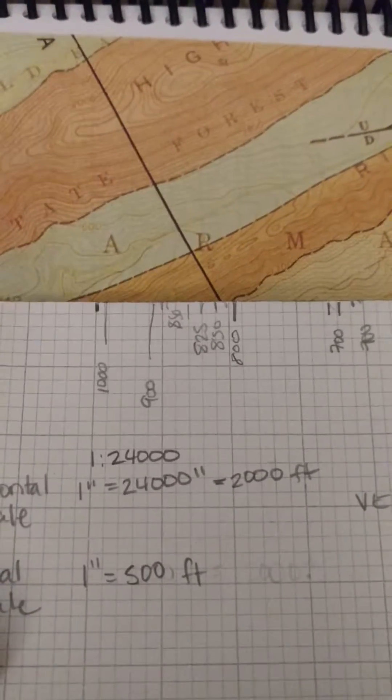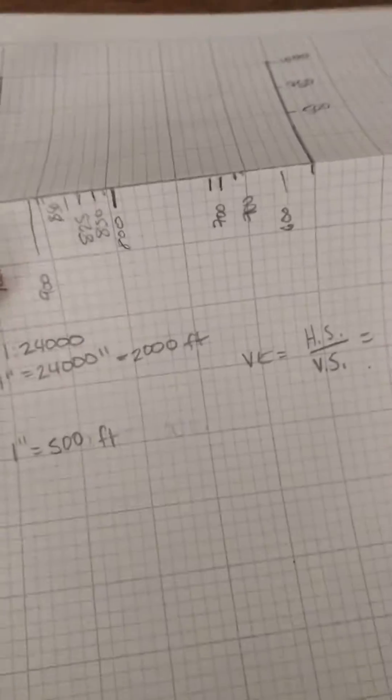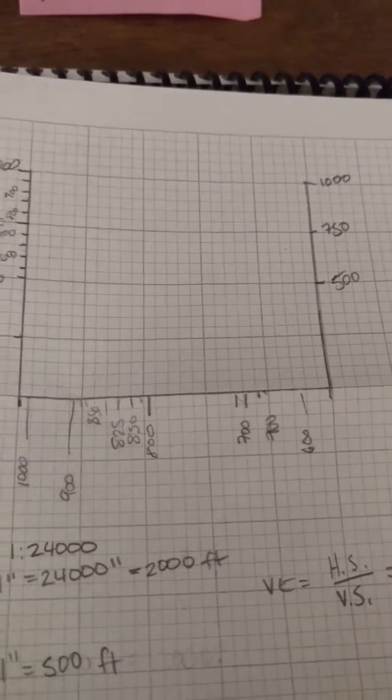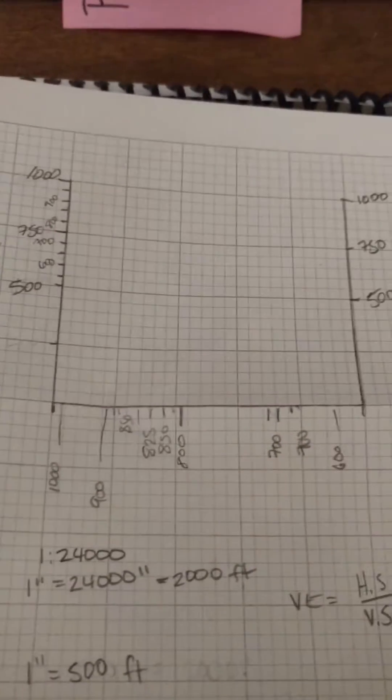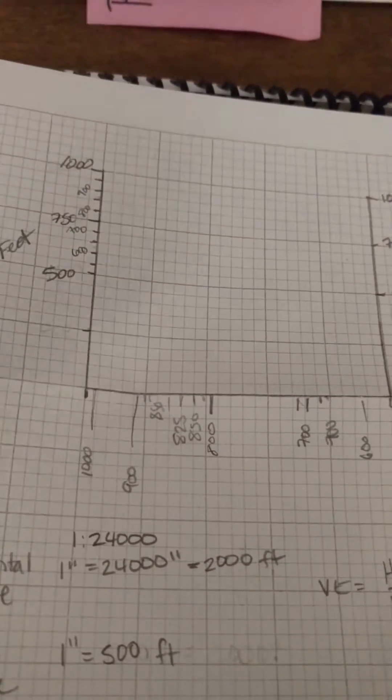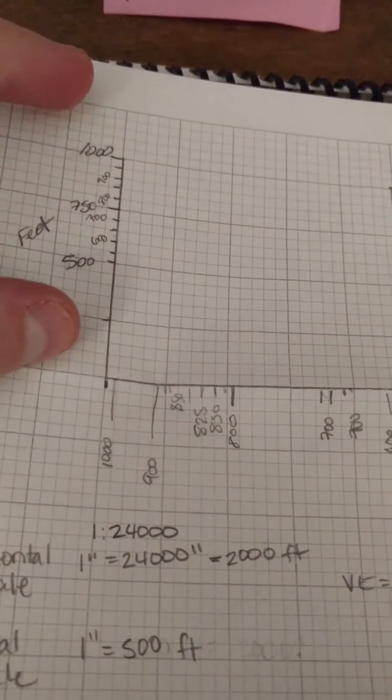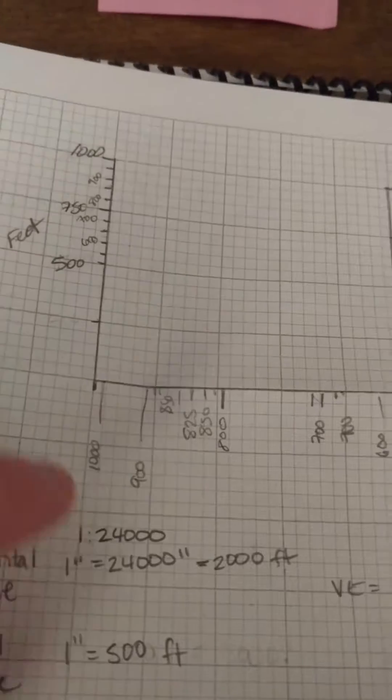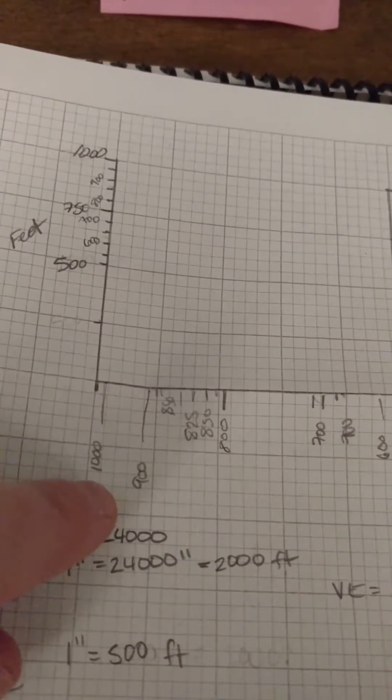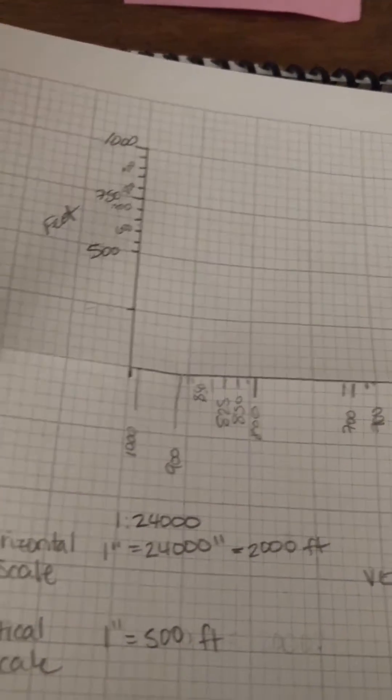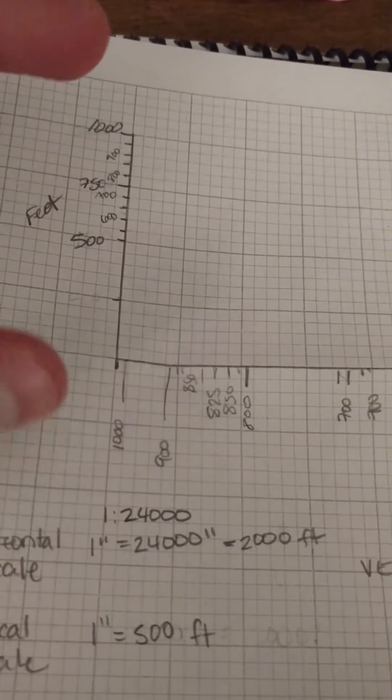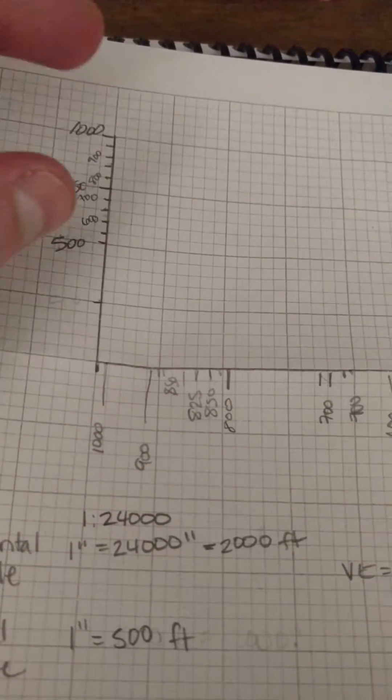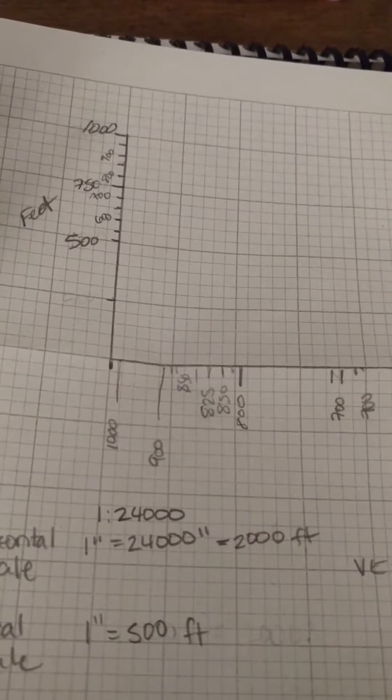So this is where you need to start thinking about your vertical exaggeration. If you unfold your piece of paper, you can draw these tall horizontal lines on the side, and you need to make sure that you're going to accommodate enough vertical distance to be able to plot your highest elevation. I've got to go to 1,000, and I want it to be pretty even units, so I decided to make every inch 500 feet.